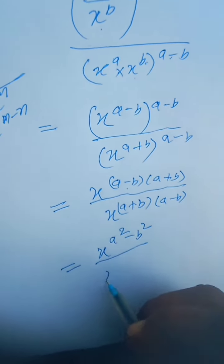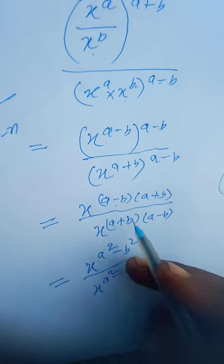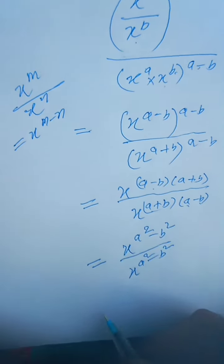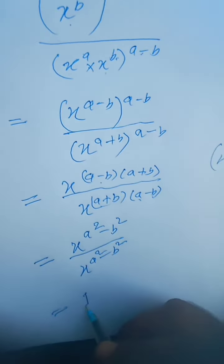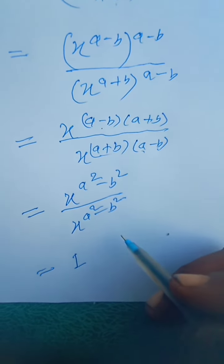Again divided by x to the power a square minus b square. And this expression will be equal to 1.